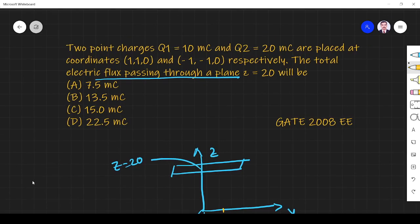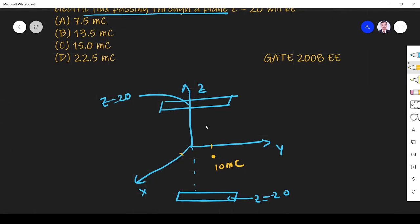Then minus 1, minus 1. x minus 1, y minus 1 means maybe here.